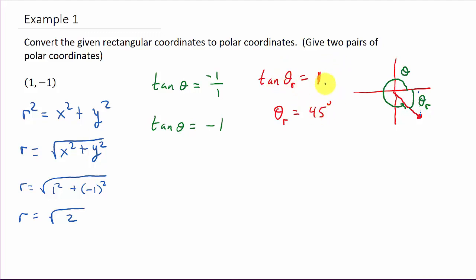And so I can get theta sub r. I can get that is equal to 45 degrees. Because we know the tangent of 45 is 1. So keep in mind, this is our 45 degrees. That's our reference angle. So that's going to tell us that theta is equal to 360 minus 45. So theta, that's going to be 360 minus 45 is 315.